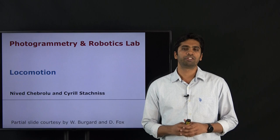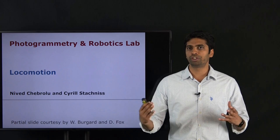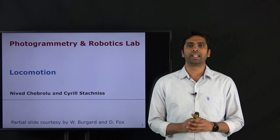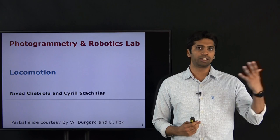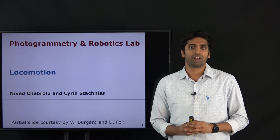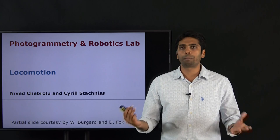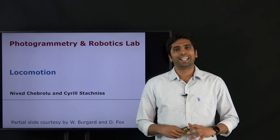Welcome everyone. Today we'll be talking about the topic of locomotion, which essentially deals with how different mobile robotic systems move in their environment. There are different examples of mobile robotic systems: small robots which move in indoor environments, autonomous cars which move in urban cities, flying drones which have propellers, or complex movement systems such as humanoids which have legged systems.